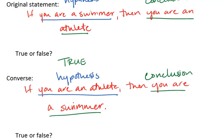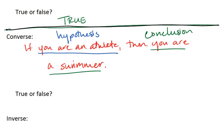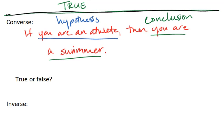Now we want to determine if the converse is true or false. So remember, the converse we have is if you are an athlete, then you are a swimmer. We assume the hypothesis to be true, that you are an athlete. Does that necessarily mean you are a swimmer?